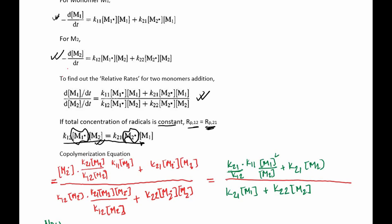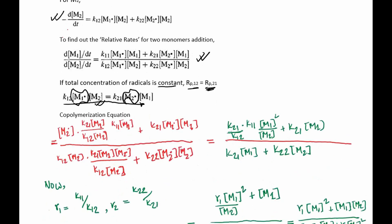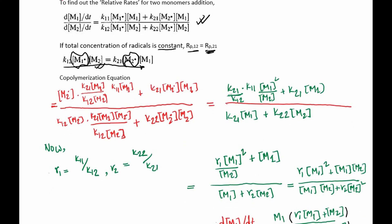I have already written the copolymerization equation to make this video a little bit quicker, since this is simple math. Looking at this particular equation, we are saying that these terms are equal, so we can clearly write that this M1 radical is equal to this expression.